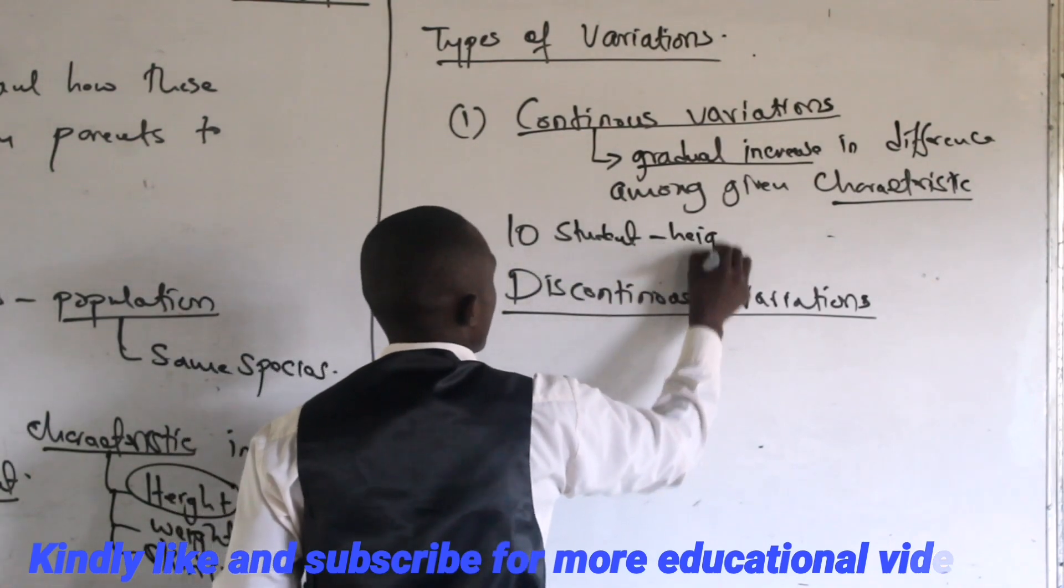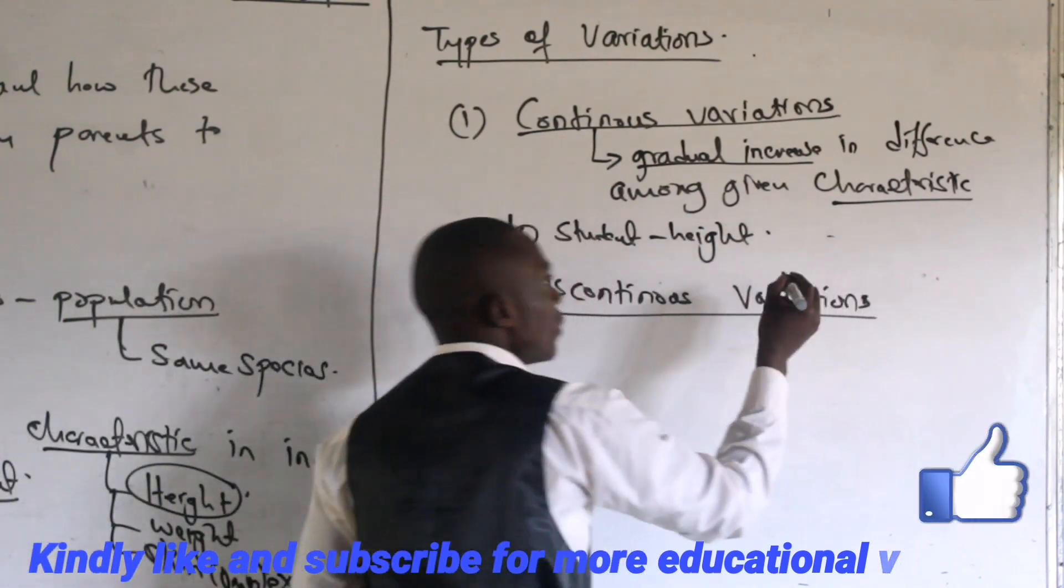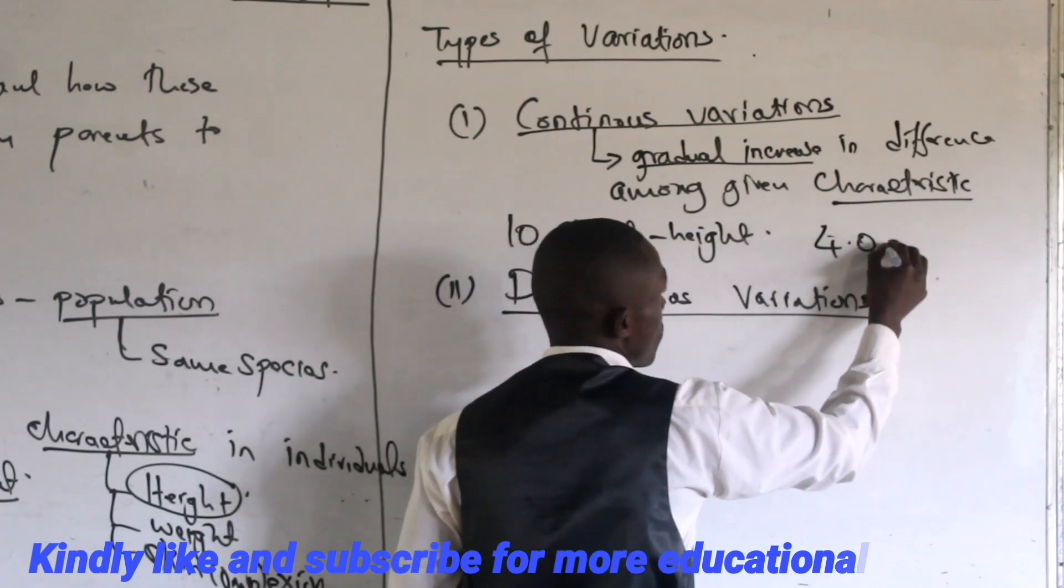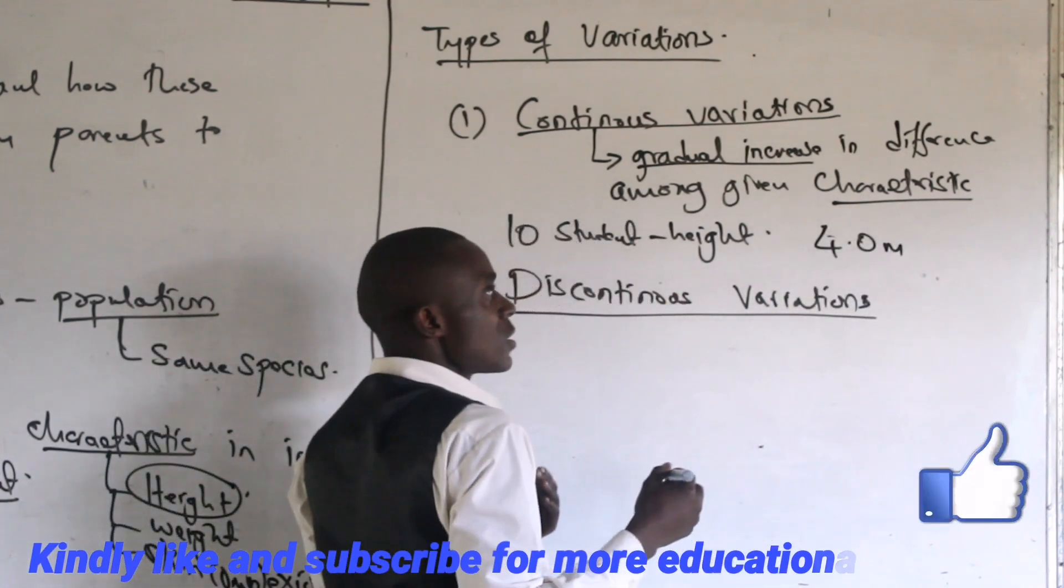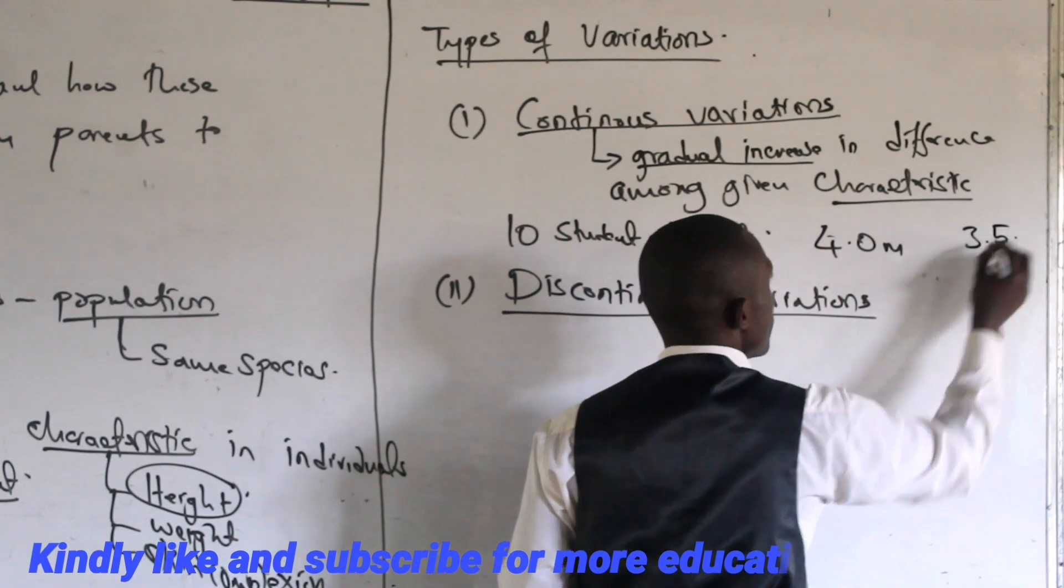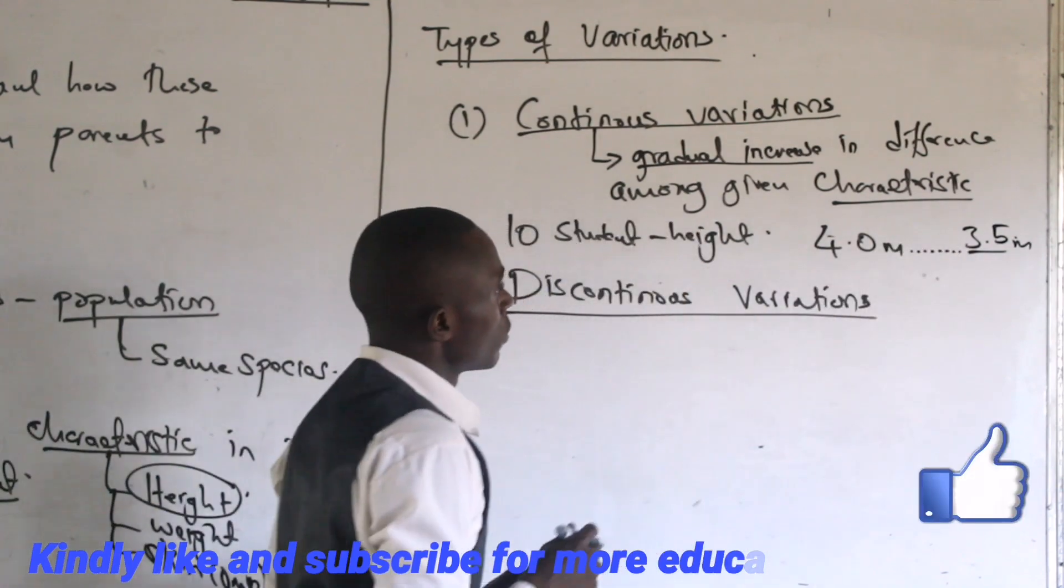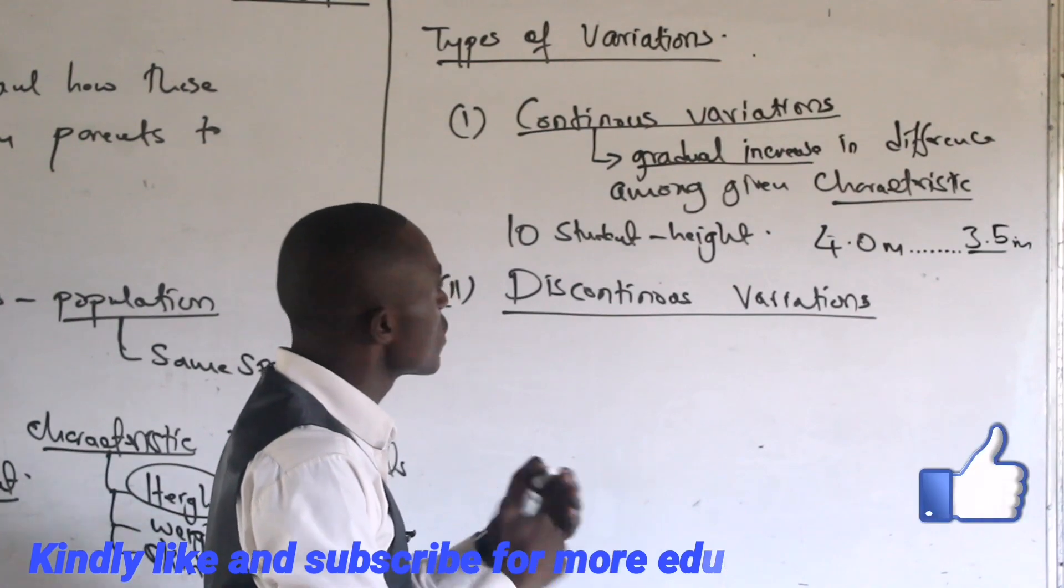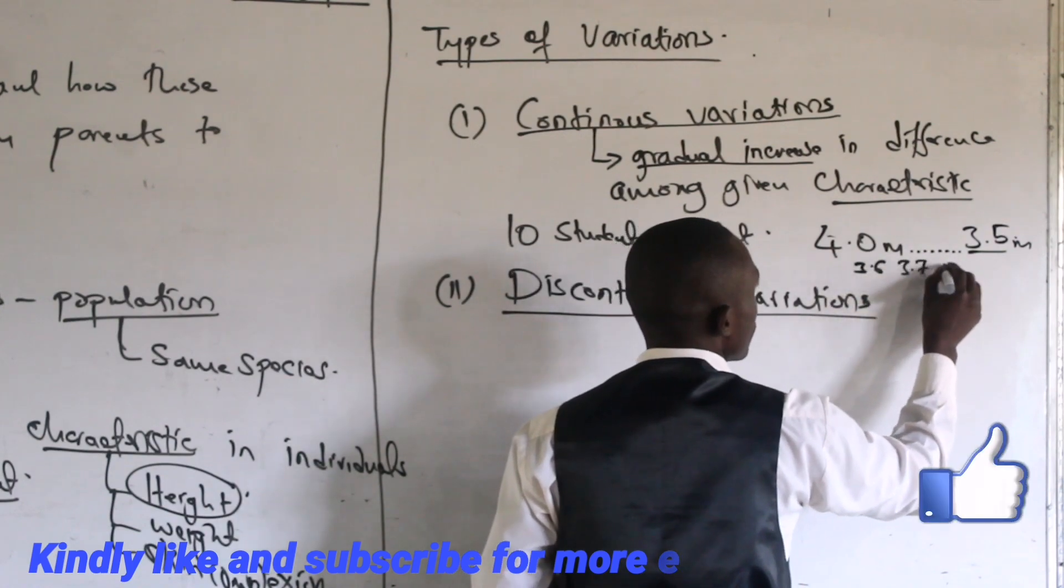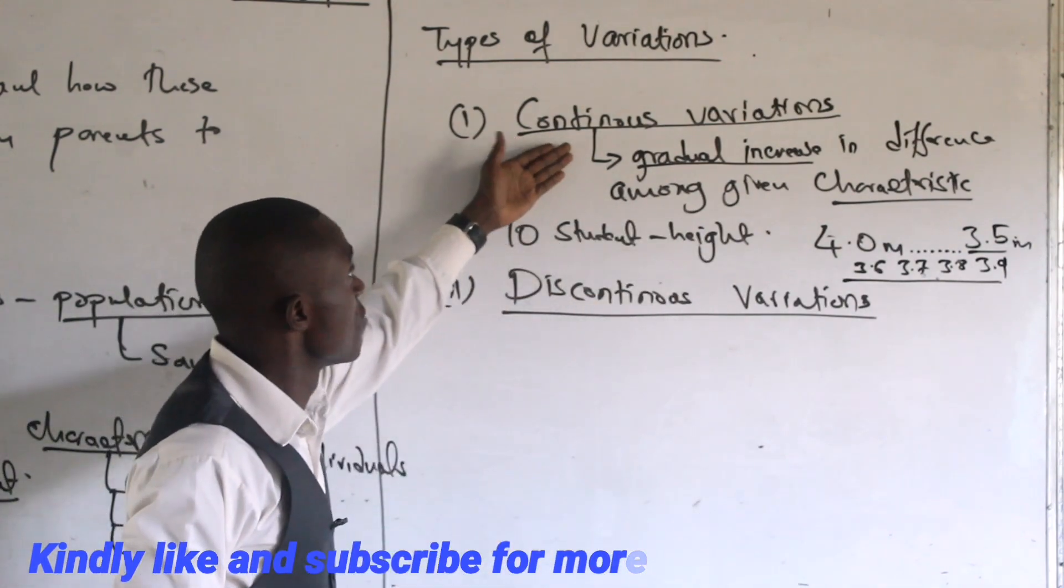You realize that we shall have a gradual increase. For example, let's say the tallest student maybe could be 4.0 meters, then the shorter student could be 3.5 meters. I will realize that between 3.5 meters and 4.0 meters, we have continuous increase which is gradual. We can have 3.6, 3.7, 3.8, 3.9. Basically, this forms continuous variation.